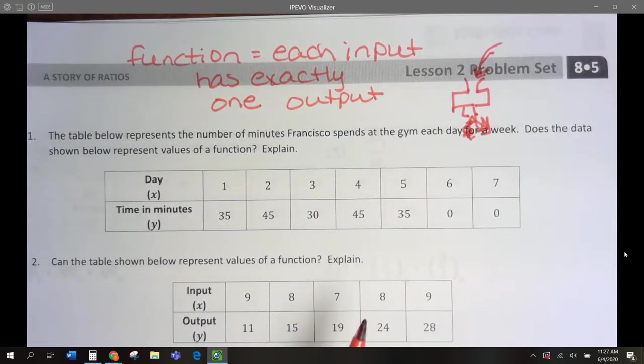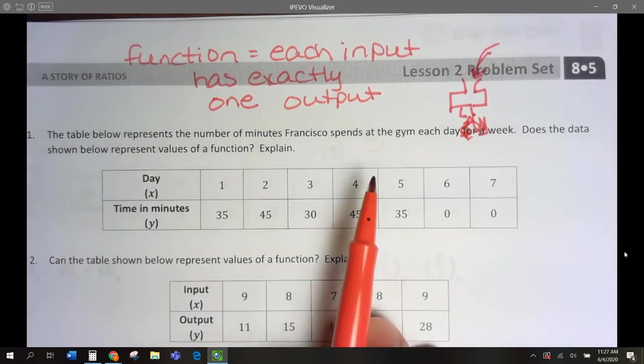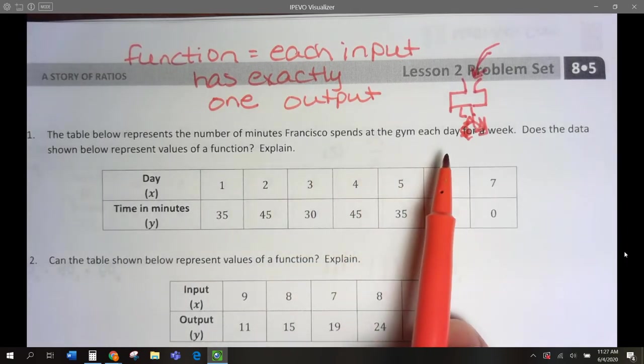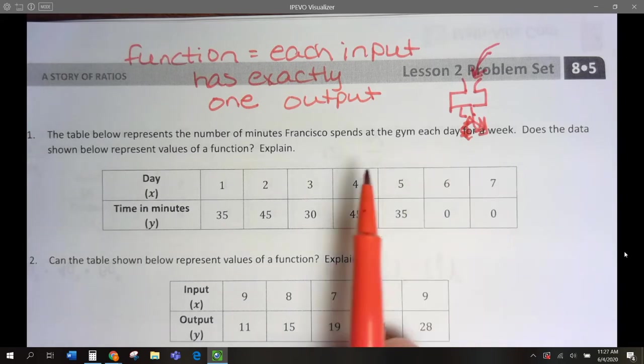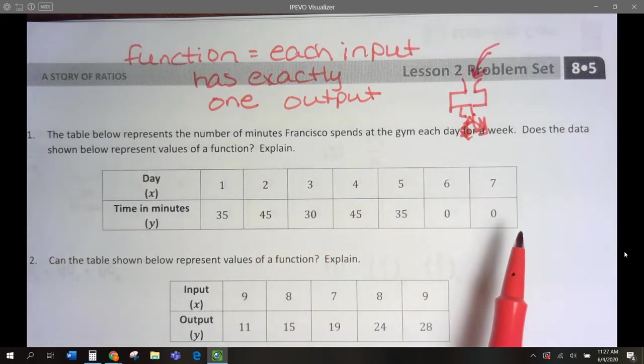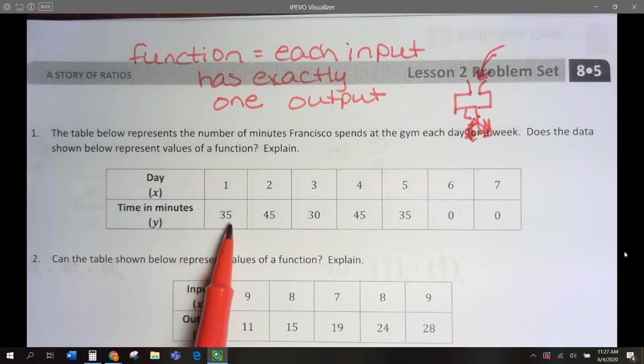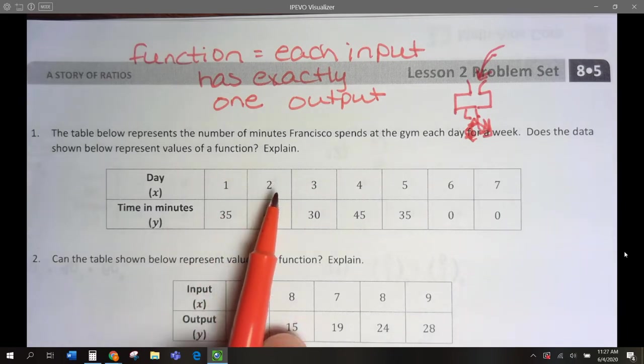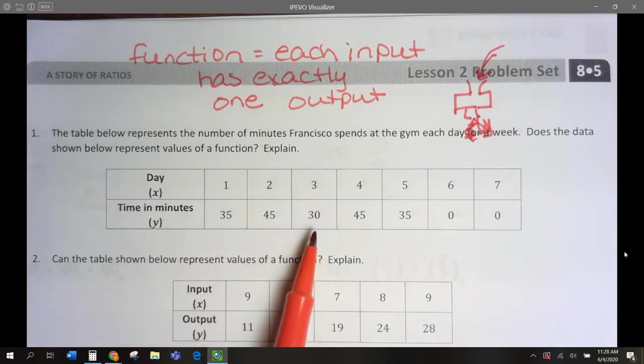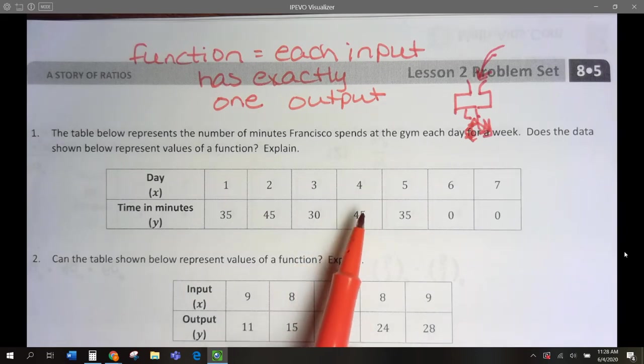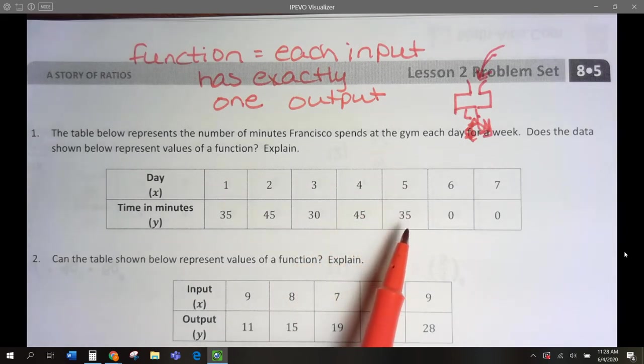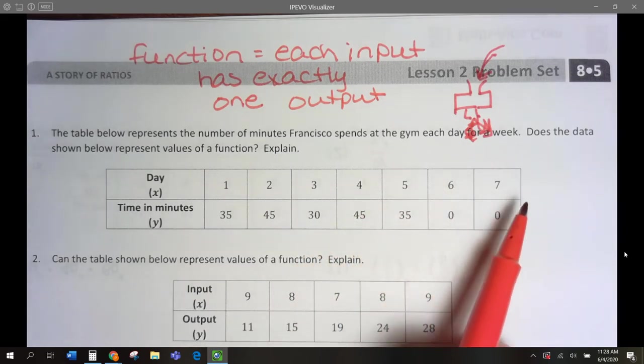They want to know, looking at this one, this is the number of minutes Francisco spends at the gym each day of the week. Is this a function? For day 1, 35. Day 2, 45. Day 3, 30. Day 4, 45. Day 5, 35. Day 6, 0. And day 7, 0.